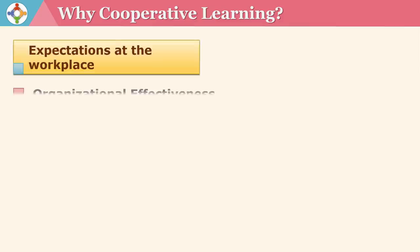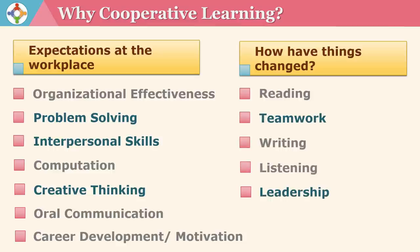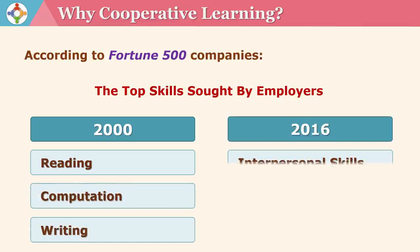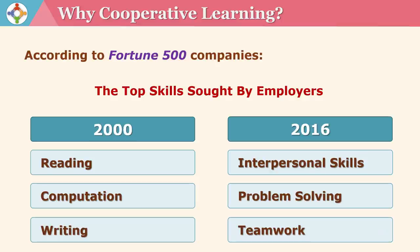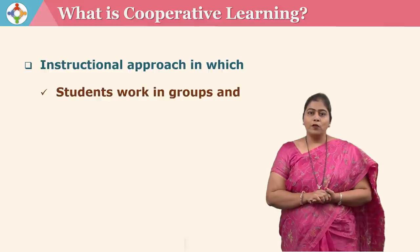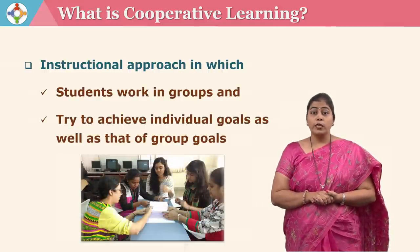Today we speak so much about cooperative learning and there are numerous researches being conducted on it, but why is cooperative learning strategy of such importance in our society? In today's environment our expectations from employees have completely changed. We want employees to be able to work in a team, acknowledge the views of others, do creative thinking, develop leadership and followership qualities, indulge in problem solving and have interpersonal skills. According to Fortune 500 companies, the top skills sought by employers today are interpersonal skills, problem solving and teamwork.